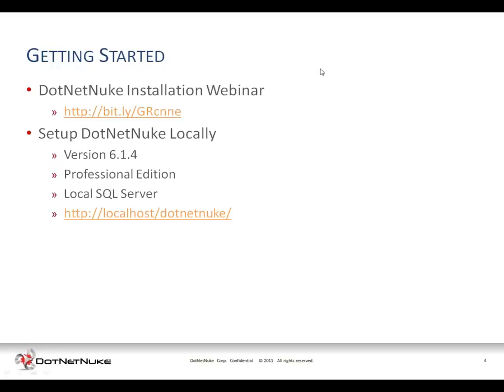In the .NET Nuke installation webinar last week, I showed you how to install .NET Nuke. We installed .NET Nuke version 6.1.4 using the Professional Edition, running a local copy of SQL Server 2008, and it's currently set up with the URL localhost slash .NET Nuke. We've set up an application within our local copy of IIS, the Windows web server, and we can access it from our local machine using that local host address.